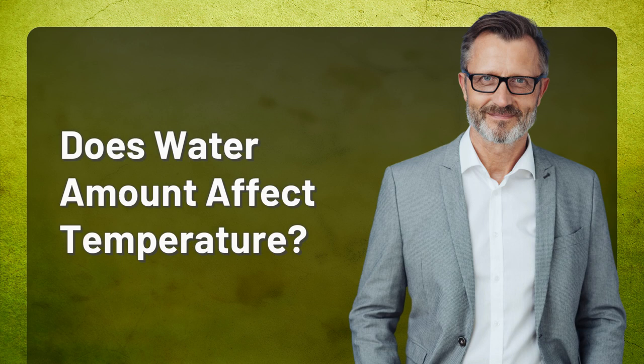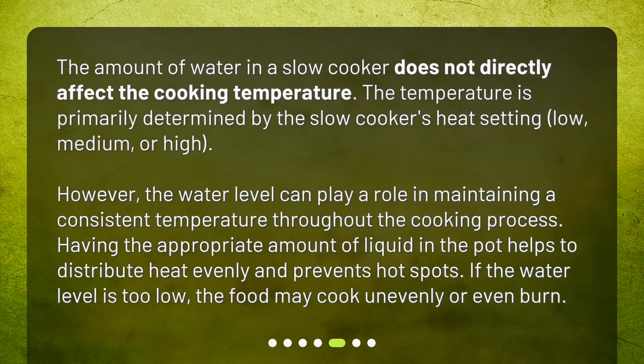Does water amount affect temperature? The amount of water in a slow cooker does not directly affect the cooking temperature. The temperature is primarily determined by the slow cooker's heat setting — low, medium, or high. However, the water level can play a role in maintaining a consistent temperature throughout the cooking process. Having the appropriate amount of liquid helps to distribute heat evenly and prevents hot spots. If the water level is too low, the food may cook unevenly or even burn.